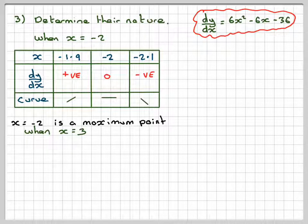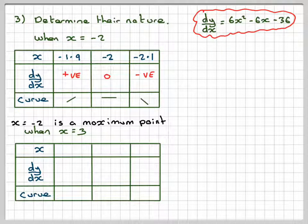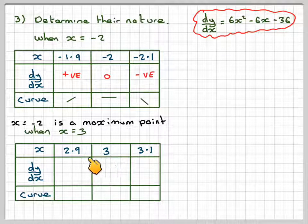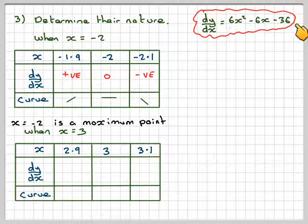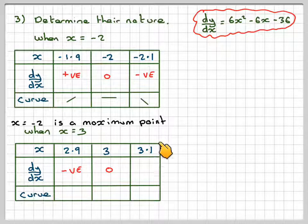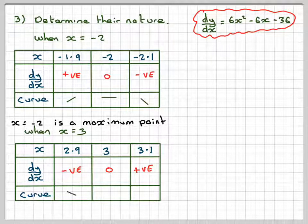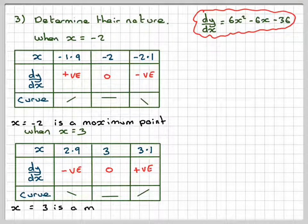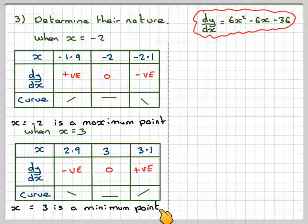We repeat for x = 3. Making a table with 2.9 just before and 3.1 just after: putting 2.9 into the gradient function gives a negative value; putting 3.1 gives a positive value; putting 3 gives 0. So negative slope → horizontal → positive slope: therefore x = 3 is a minimum point.